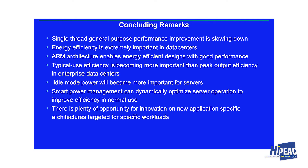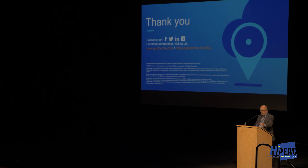In conclusion: single-thread general-purpose performance improvement is slowing down. Energy efficiency is extremely important in data centers — even large organizations like CERN have started to evaluate the ARM architecture because it enables energy-efficient designs at good performance. Typical-use efficiency is becoming more important than peak efficiency; idle power matters, and there's an opportunity for smart power management to dynamically optimize power allocation across servers. Last but not least, there's plenty of opportunity for innovation — both from a research and product perspective — for application-specific architectures targeted at specific workloads.